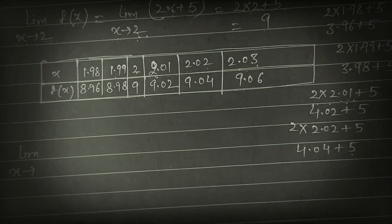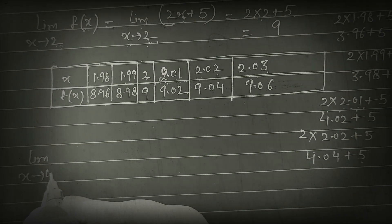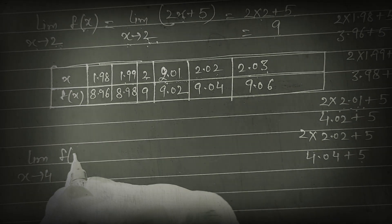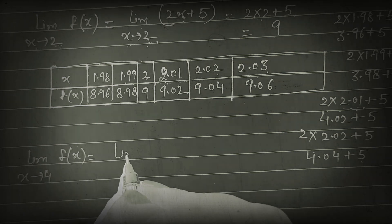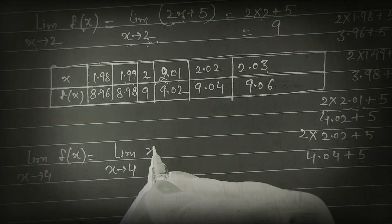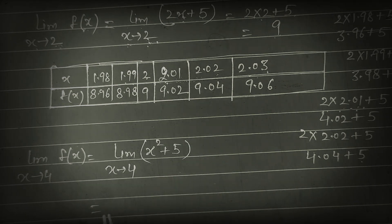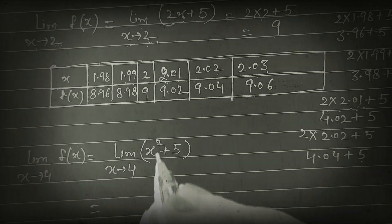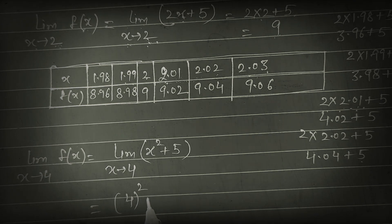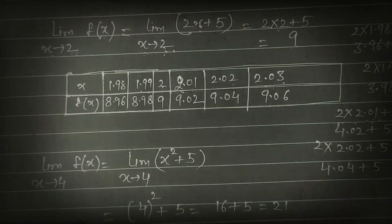One more example. Limit x tends to 4 of f(x), where f(x) = x² + 5. Then it is 4² + 5 = 16 + 5 = 21.